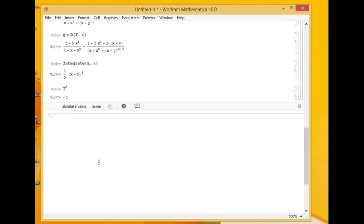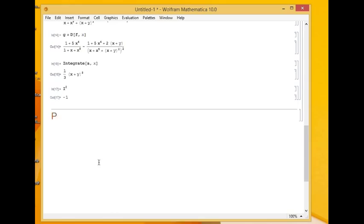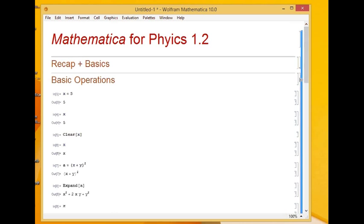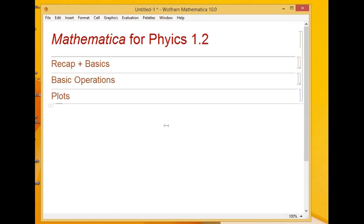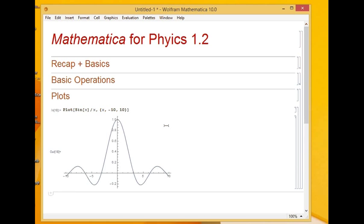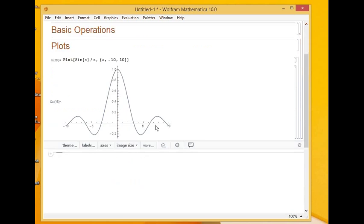Now we will see how to make plots in Mathematica. I will make a new section: Plots. Let me close the previous one. To make a 2D plot, the command is simple: Plot. Let's say I want to plot sin x by x. Then I have to pass the range of x. Range is given by, within curly brackets, x and lower limit, comma, upper limit. I close the curly brackets and the square brackets for plot, and I evaluate it. So I get the plot of sin x by x.